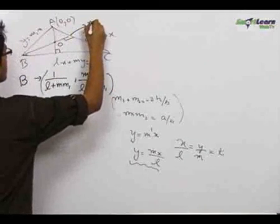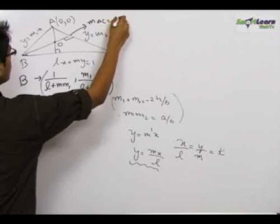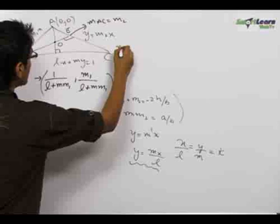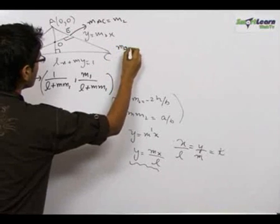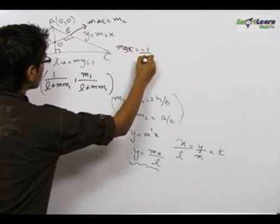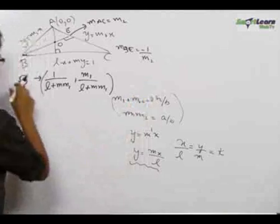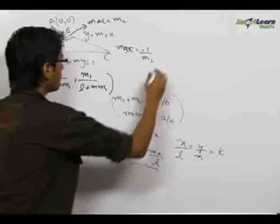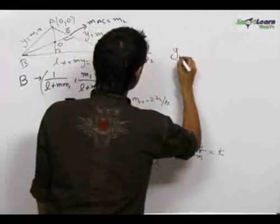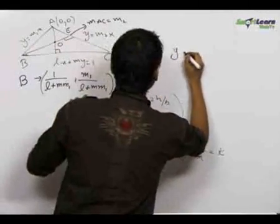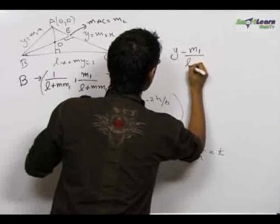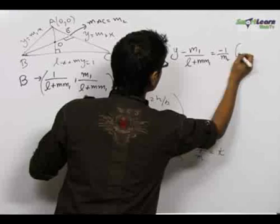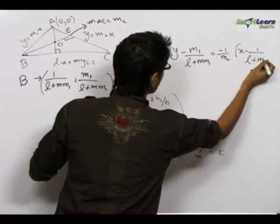We know the slope of AC as m2, so the slope of BE which is perpendicular to AC will be equal to the negative reciprocal which will be minus 1 upon m2. So we know the point B, we know the slope of BE, so we can write the equation of BE as y minus m1 upon L plus Mm1 equals minus 1 upon m2 times x minus 1 upon L plus Mm1.